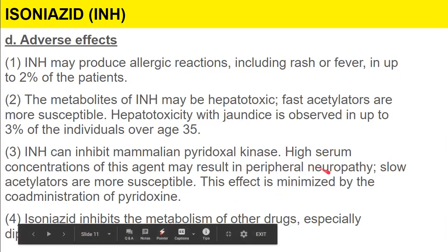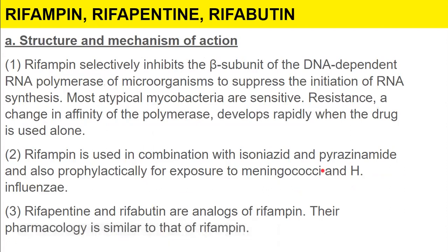Rifampin selectively inhibits the beta subunit of DNA-dependent RNA polymerase of microorganisms, suppressing the initiation of RNA synthesis. Most atypical mycobacteria are sensitive. Resistance — due to change in affinity of polymerase — develops rapidly when the drug is used alone, so it is used in combination with isoniazid and pyrazinamide. It is also used prophylactically for exposure to meningococcal and H. influenzae infections. The analogues rifapentine and rifabutin are pharmacologically similar.